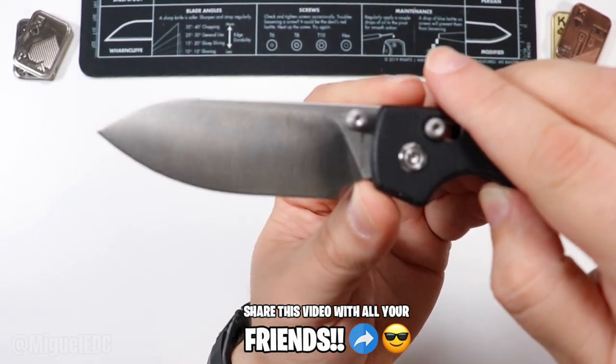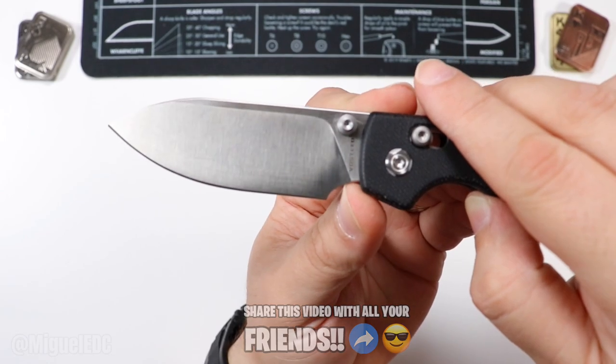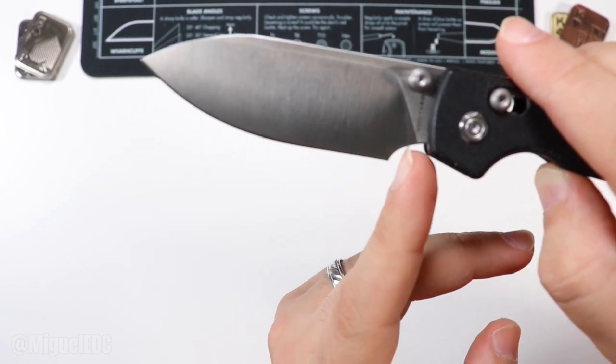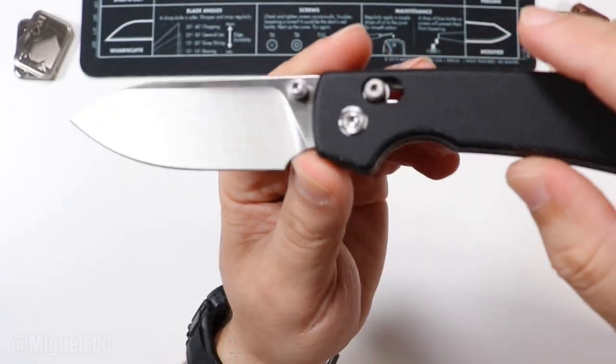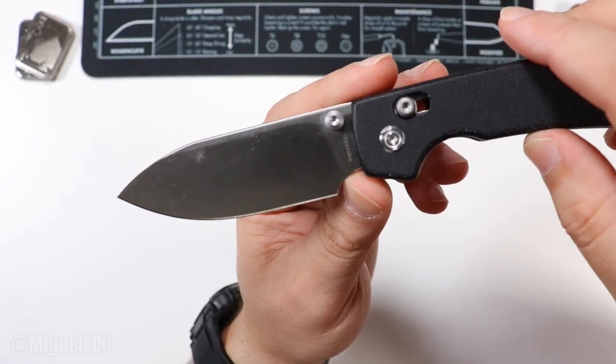Check this out too. The plunge grind ends about right here where my nail hits the blade. And you have all this much blade here to sharpen without getting a smile. That's the right way to do it. Other knife companies should be taking note of that.